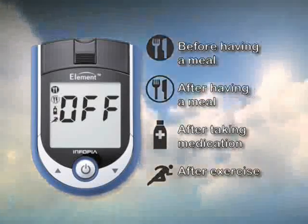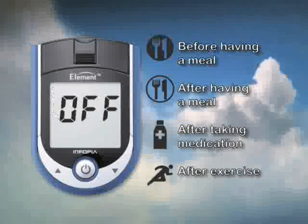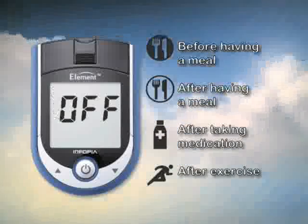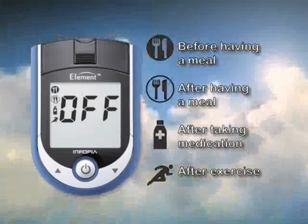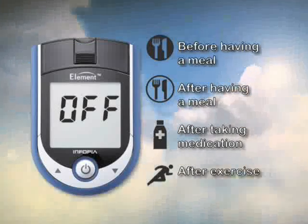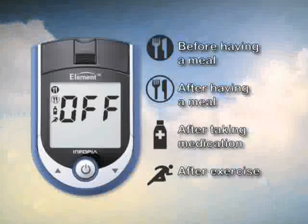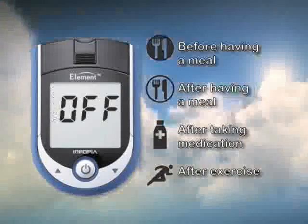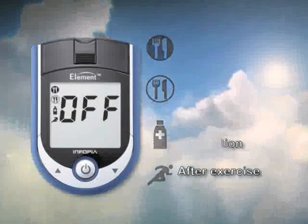The third icon is a medication bottle. This means you took your blood sugar after taking medication. The fourth icon is a running man, representing exercising. This means you took your blood sugar after physical activity.